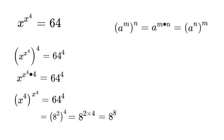So that means since both sides of the equation have the same base and same exponent, we can just solve for x to the fourth is equal to 8. So as I said, we have x to the fourth is equal to 8.